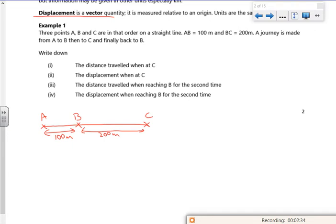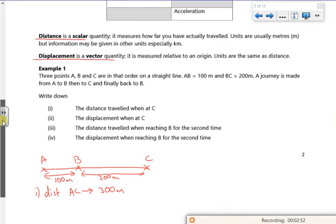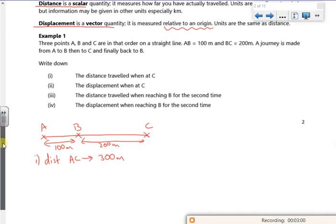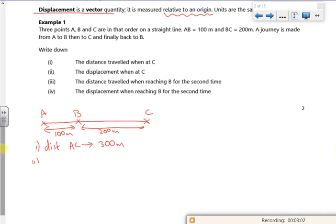So part one says the distance travelled when at C. Right then, so the distance travelled from A to C is just 300 metres. That's how much I've physically gone. Now, does it say about the displacement? So the displacement is how far you are from the origin. So for the displacement A to C, if you take A as your start point, I'm still 300 metres away.